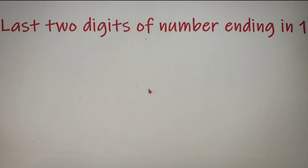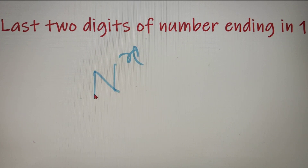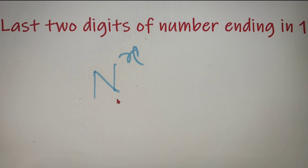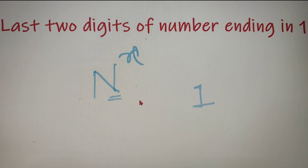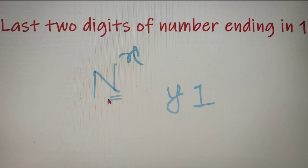Suppose you are given a number n raised to the power of x, and you have to find out the last two digits of n^x. We know that the last digit of the number is 1, and let's say the second last digit is y. So the last two digits of n is y1.